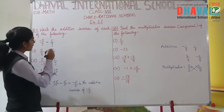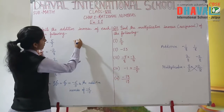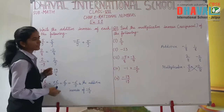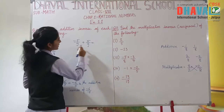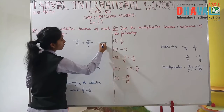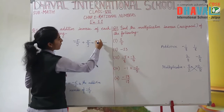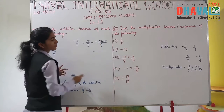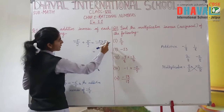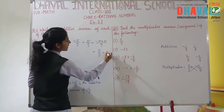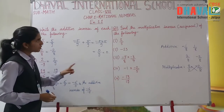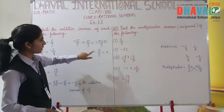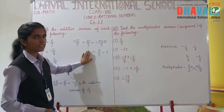Now let's verify with the answer. If we add minus 5 upon 9 and 5 upon 9, what is the answer? We get minus 5 plus 5 upon 9. Minus plus gives minus, and 5 minus 5 is 0 upon 9, which equals 0. We always have this rule: for additive inverses, when the addition of the two numbers is 0, the answer is correct.